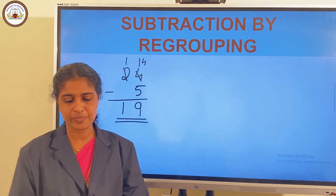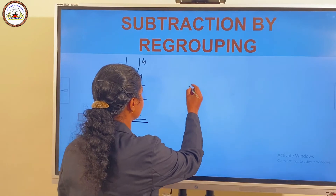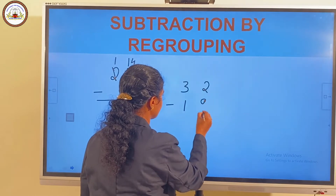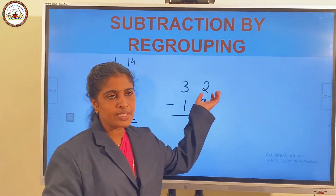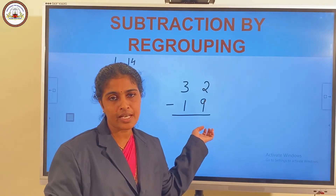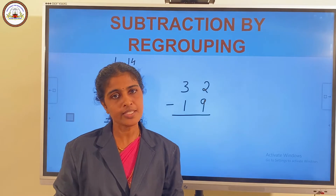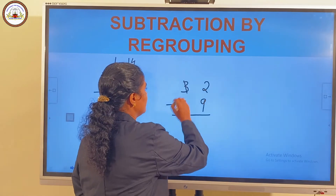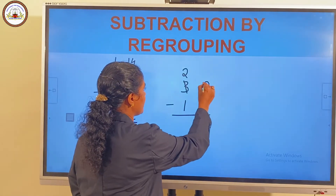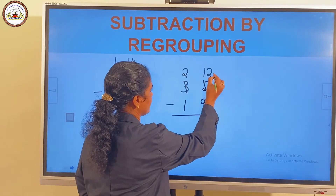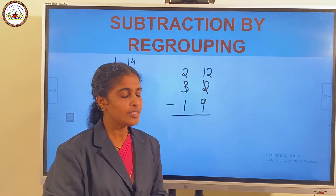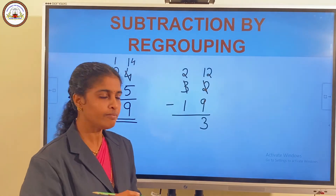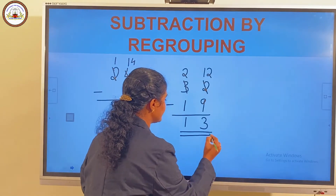Now we have another question: 32 minus 19. First we subtract the ones place. Here 2 minus 9 — 2 minus 9 is not possible. Smaller number minus bigger number is not possible. So we regroup. 3 tens becomes 2 tens and we have 12 ones in total. 12 ones minus 9 ones: 12 minus 9 is equal to 3. And 2 minus 1 is 1. So the answer is 13.